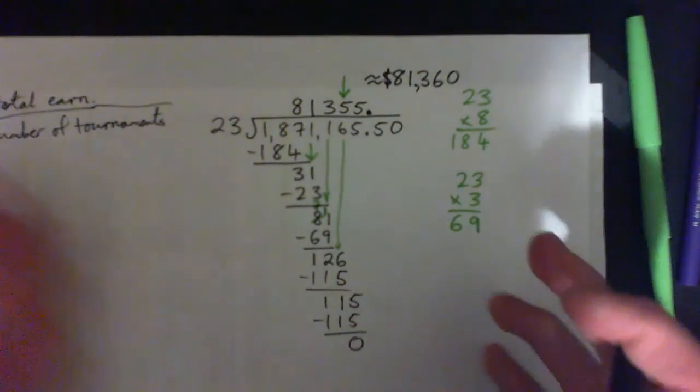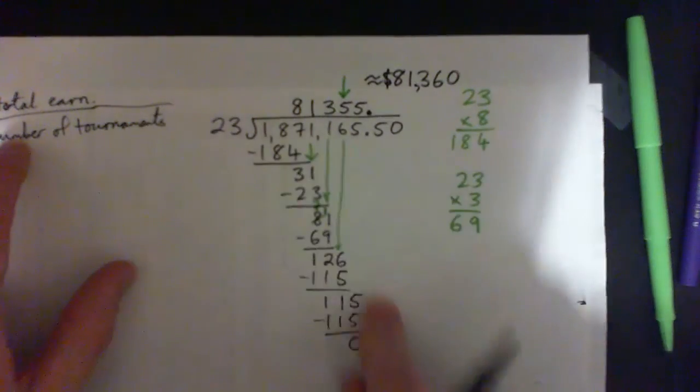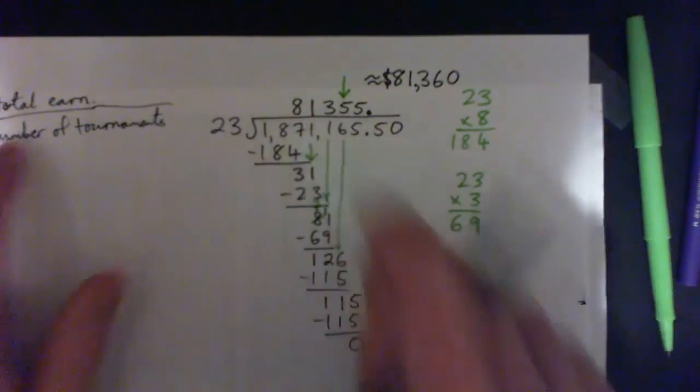And the same thing for the rest of them. You just take the total earnings, divide by number of tournaments, and do a long division, and round to the nearest $10.